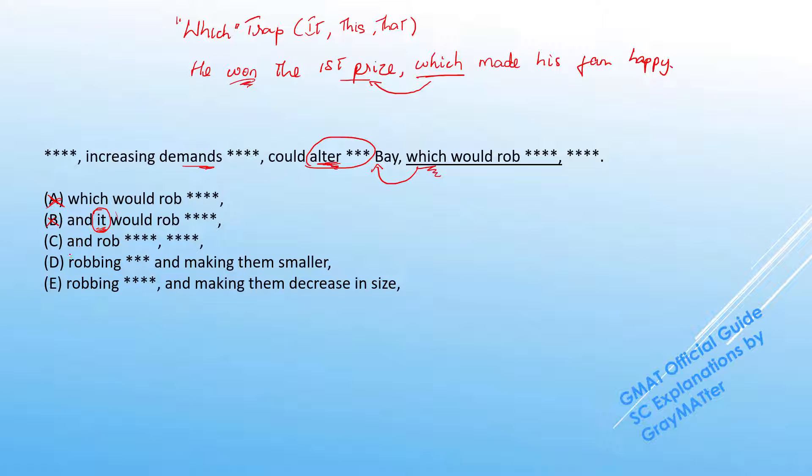Now when you vertically scan C, D and E, the split that is obvious is and rob and robbing. So how can we work with these differences? Let me modify this example a bit. Let's say he won the first prize and made his family happy, or he won the first prize, comma, making his family happy.